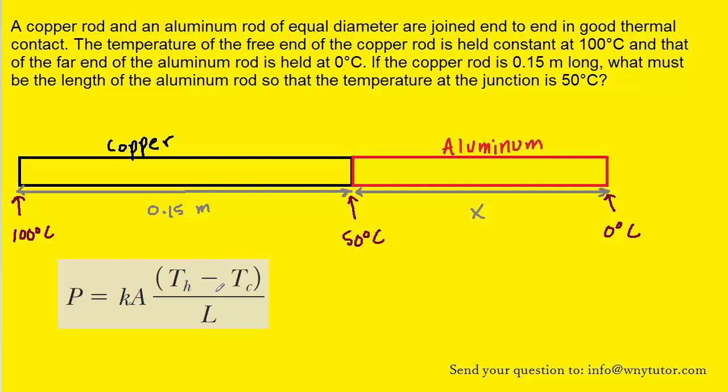The key here is that since the temperatures are held constant, the energy transfer rate through the copper rod will equal the energy transfer rate through the aluminum rod. Let's say that again because that's really important. The energy transfer rate through the copper rod is equal to the energy transfer rate through the aluminum rod.